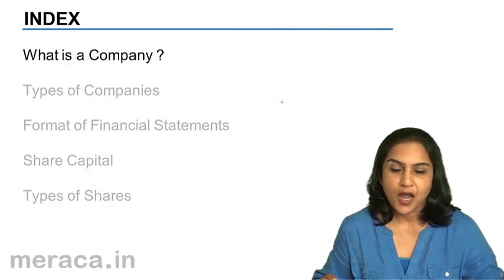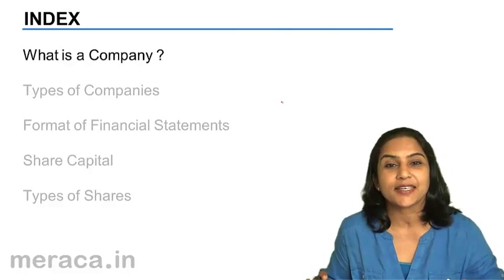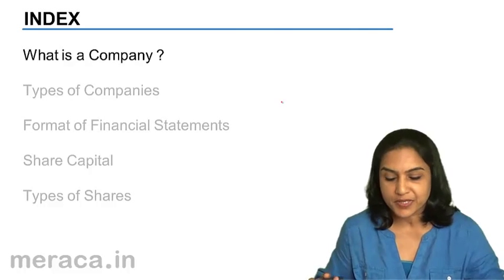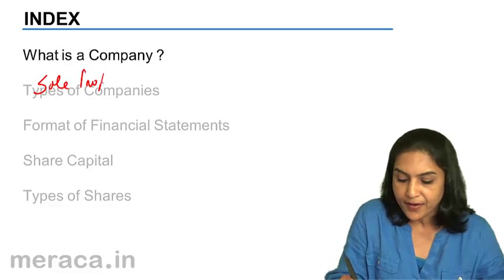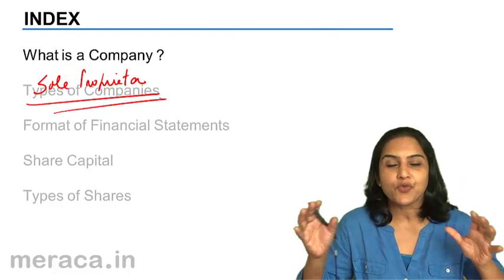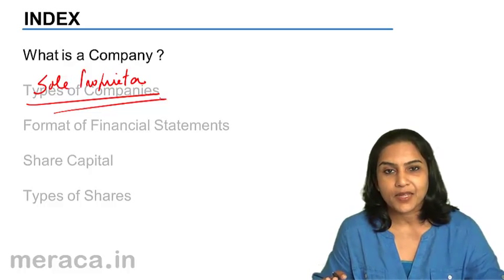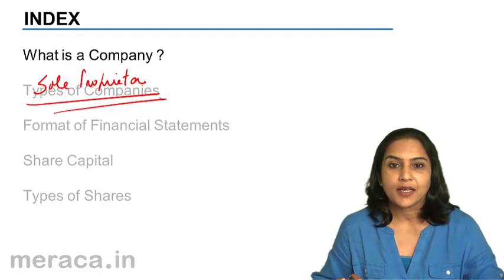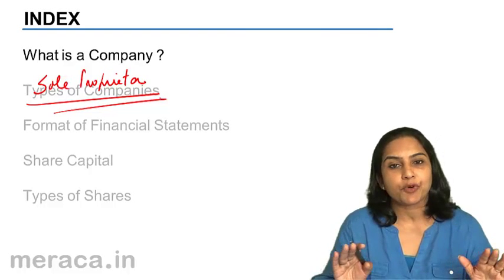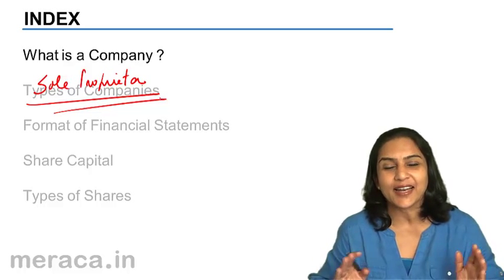Suppose a person wants to start a business. He invests, let's say, 10 lakhs of rupees and he starts his own business. This kind of structure is called a sole proprietorship, where this one person is the owner of the business. He invests 10 lakhs, is in complete control and charge, looks after the day-to-day affairs, and the profits are entirely his. When he stops working, the sole proprietorship also stops working. There is no separate legal entity as such.